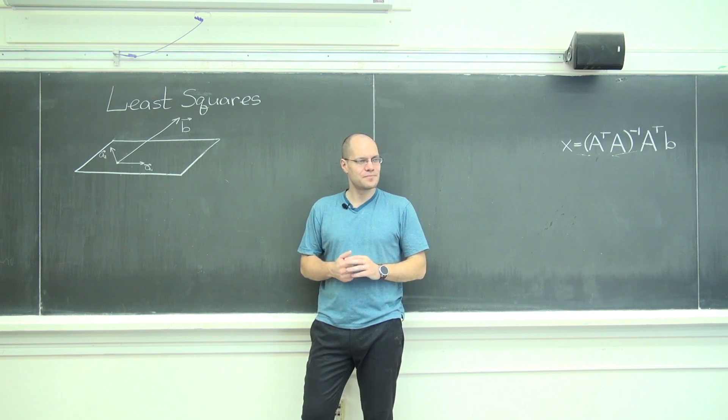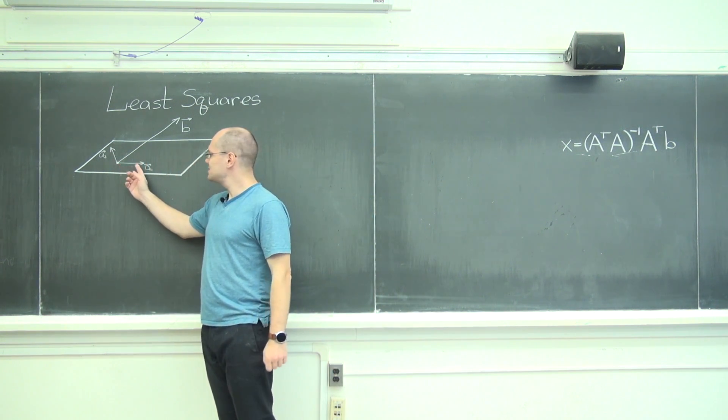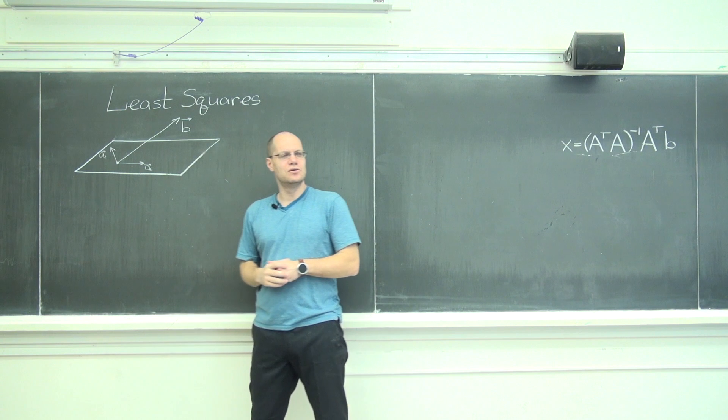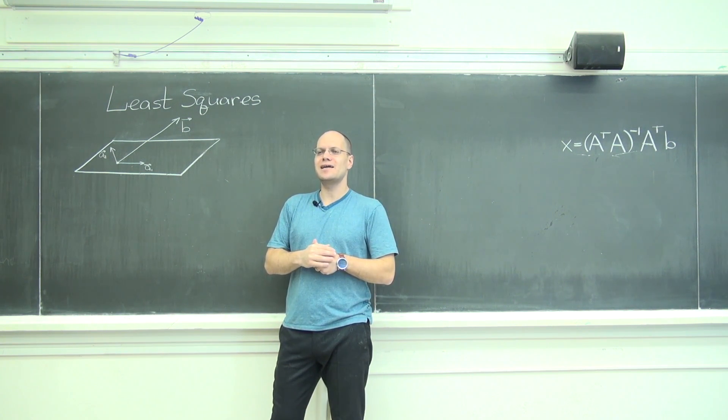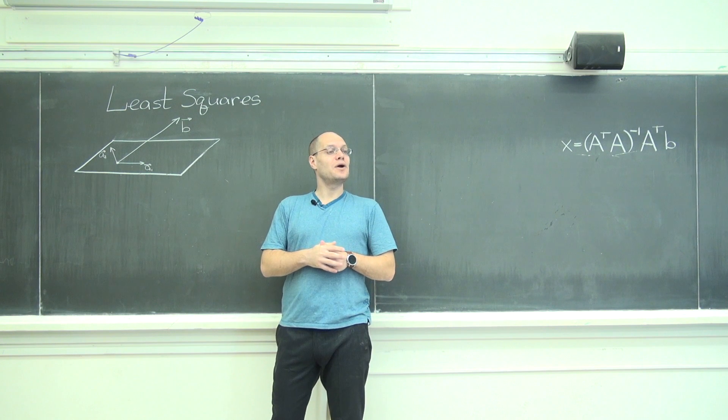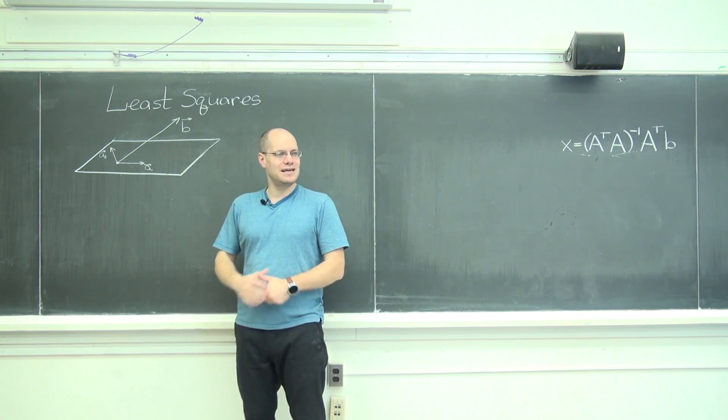Okay, here is the setup. We have a plane spanned by A1 and A2, not in any way orthogonal, just two vectors spanning a plane. And we have a third vector B that's not in that plane.